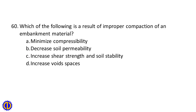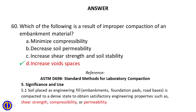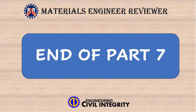Question 60: Which of the following is a result of improper compaction of an embankment material? A. Minimize compressibility, B. Decrease soil permeability, C. Increase shear strength and soil stability, D. Increase void spaces. Answer: D. Increase void spaces. Reference: ASTM D698, Standard Methods for Laboratory Compaction — Significance and Use. End of Part 7.